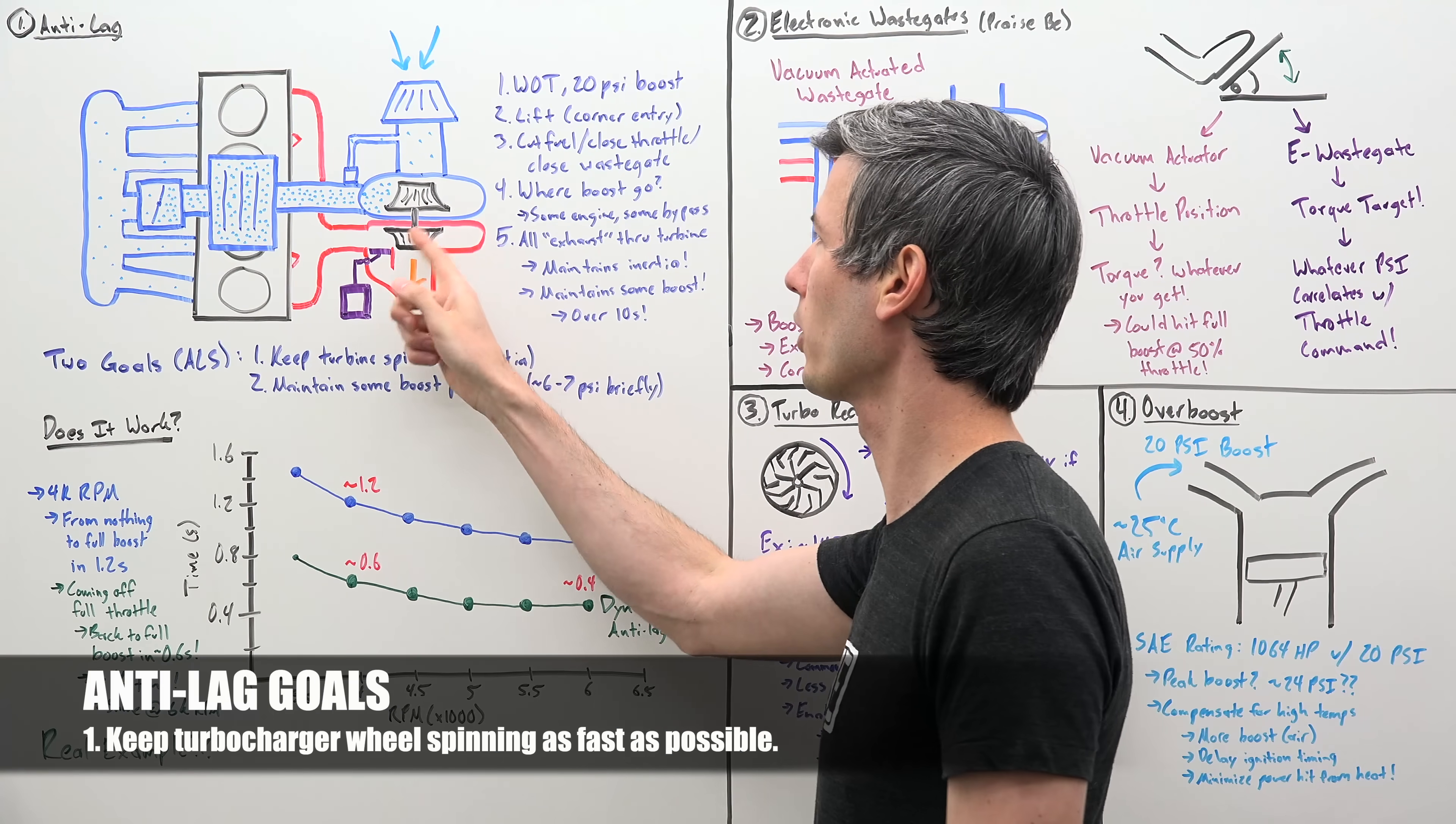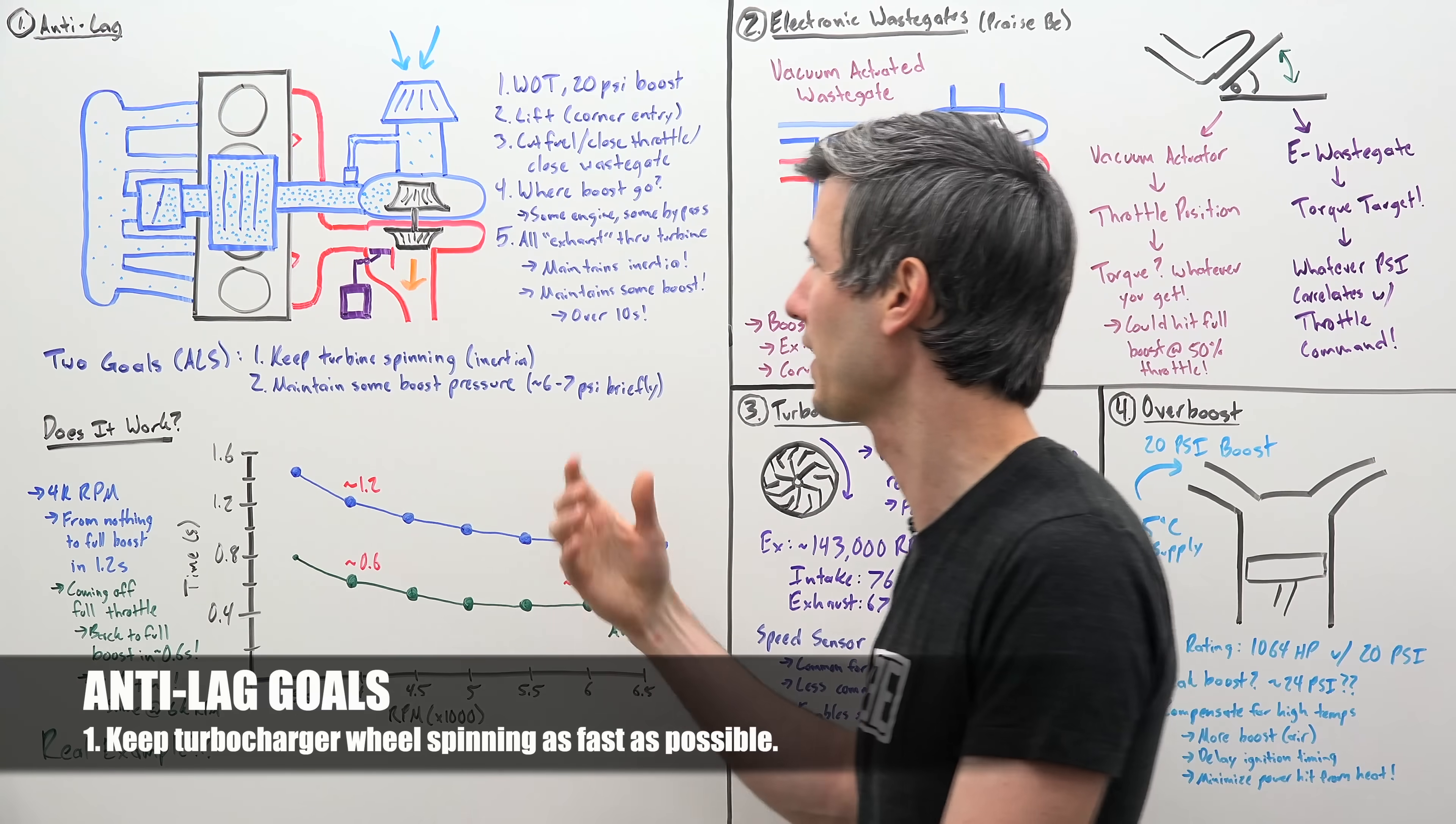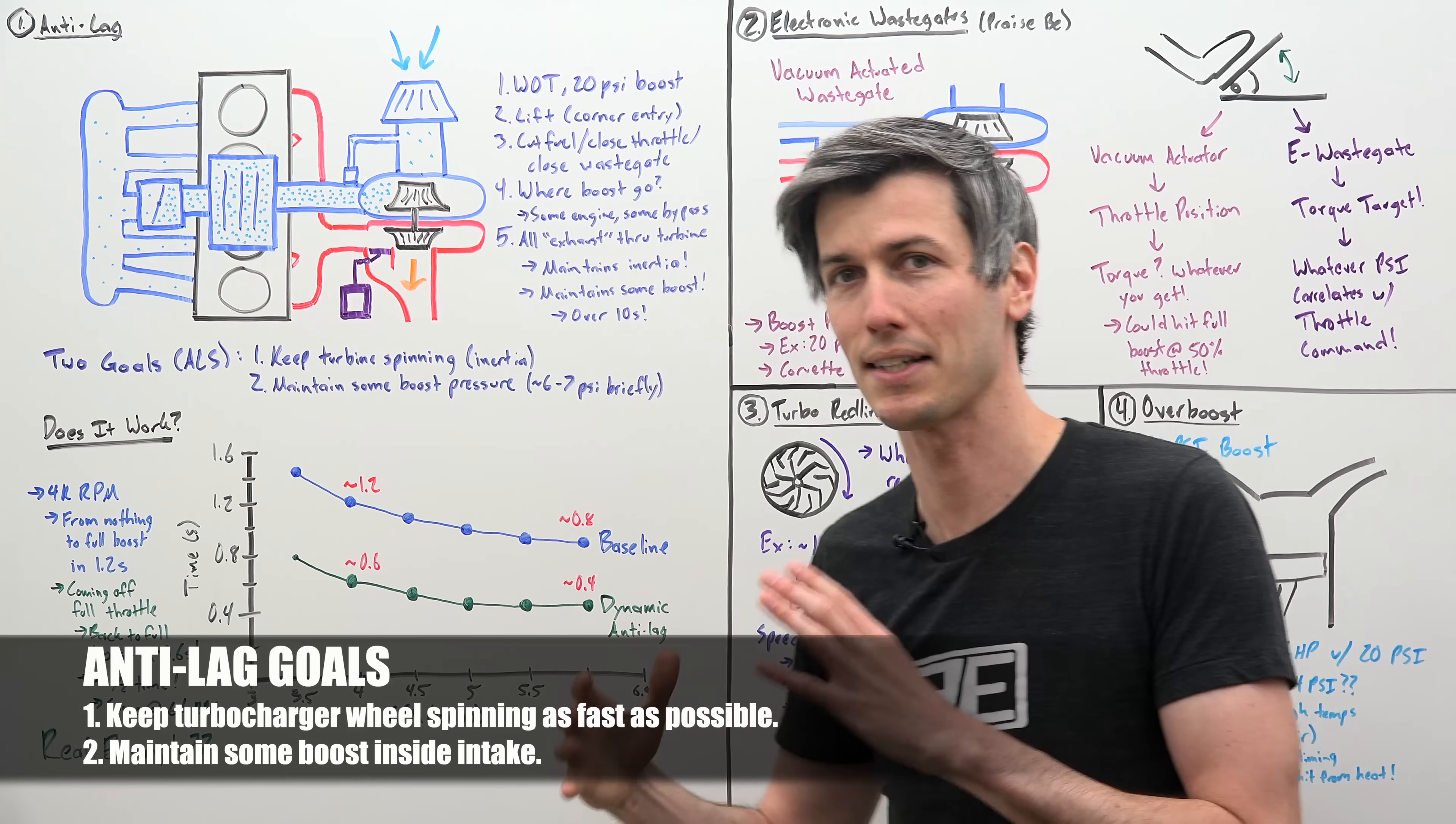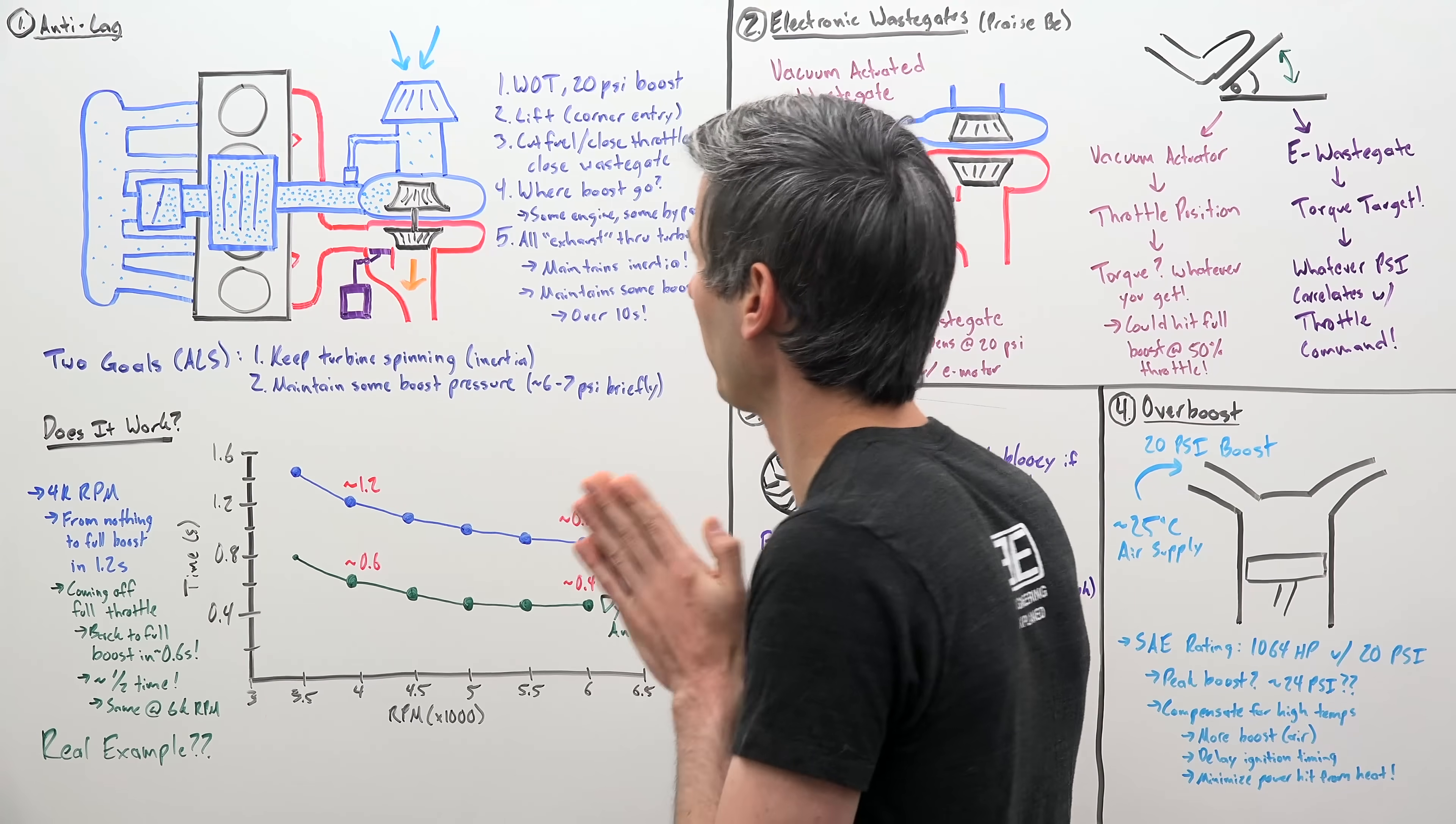First, it wants to keep that turbocharger wheel spinning as fast as possible, because once you get back on the throttle, you need to accelerate this wheel. It has inertia and it's resisting that. So if you can keep it spinning fast, you can get back into boost quicker. Also, they're trying to maintain some boost within that intake. They say as high as about 6 to 7 psi, with this thing typically operating at full boost around 20 psi.